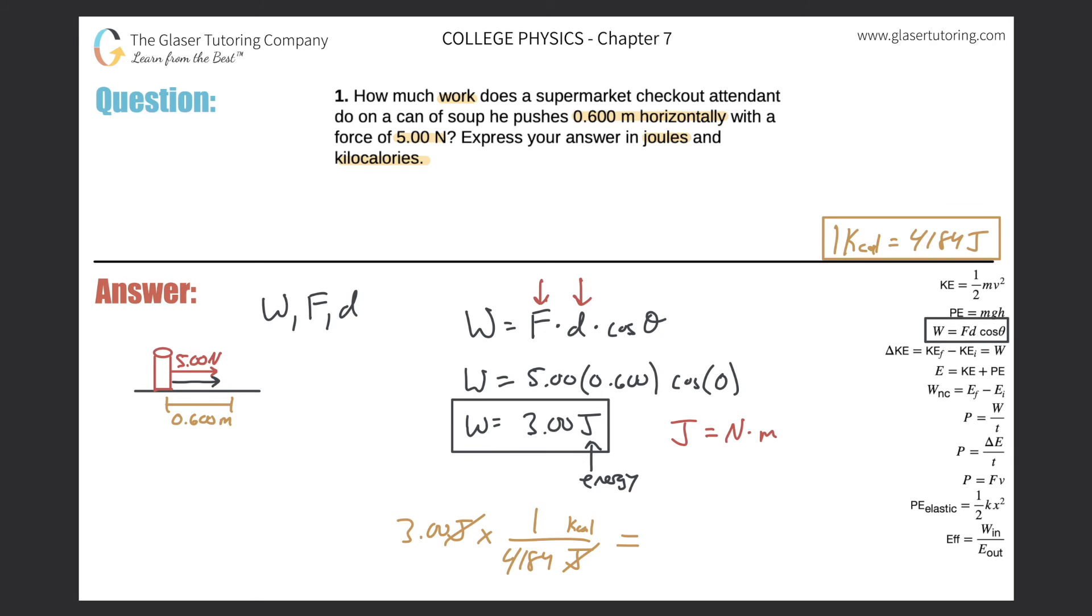And we got three divided by 4,184. 7.17, right? 7.17 times 10 to the minus 4. And that is now in kilocalories.